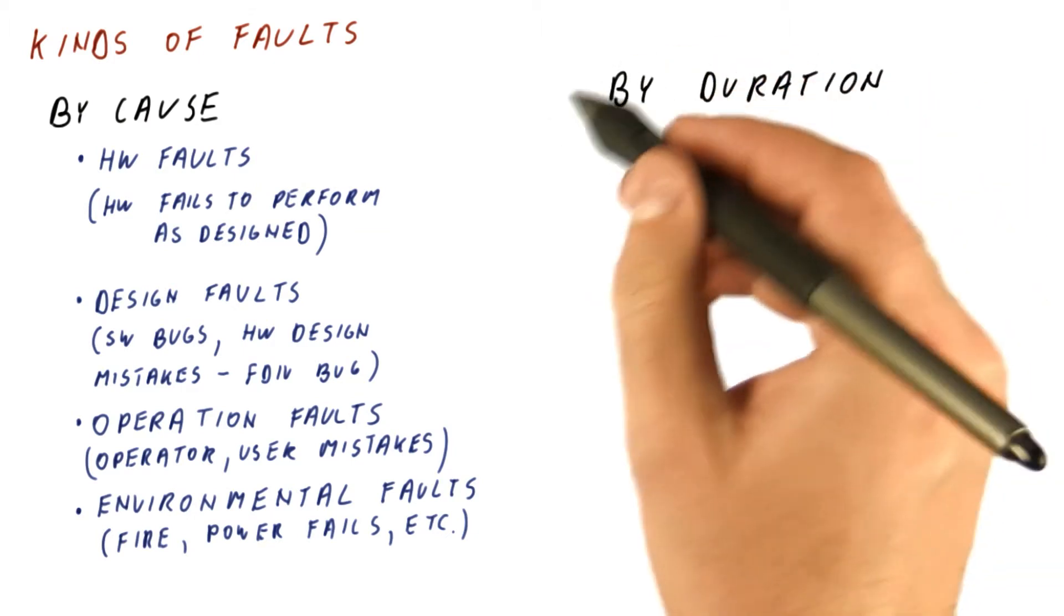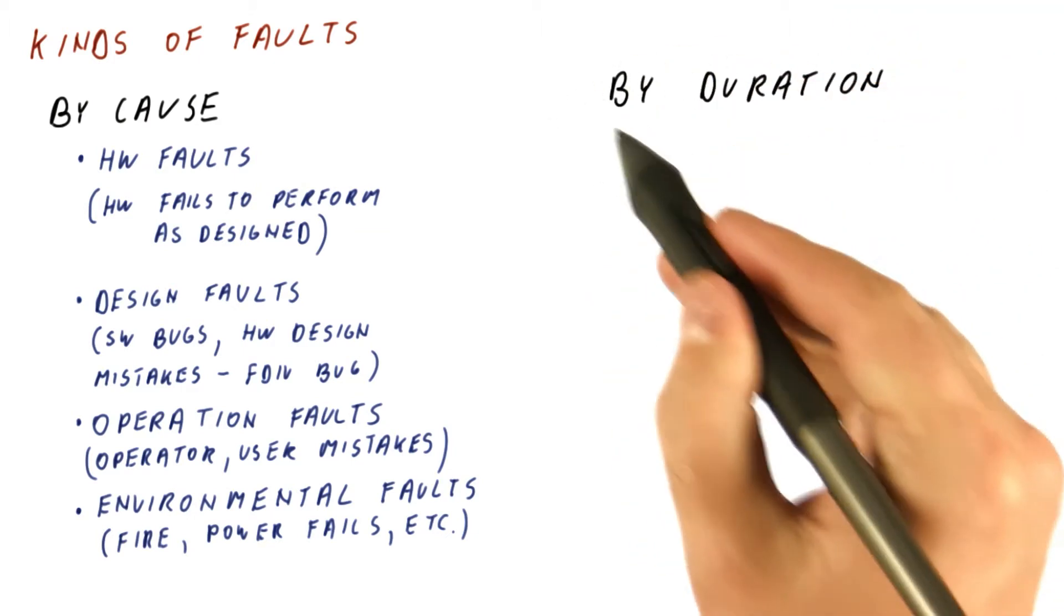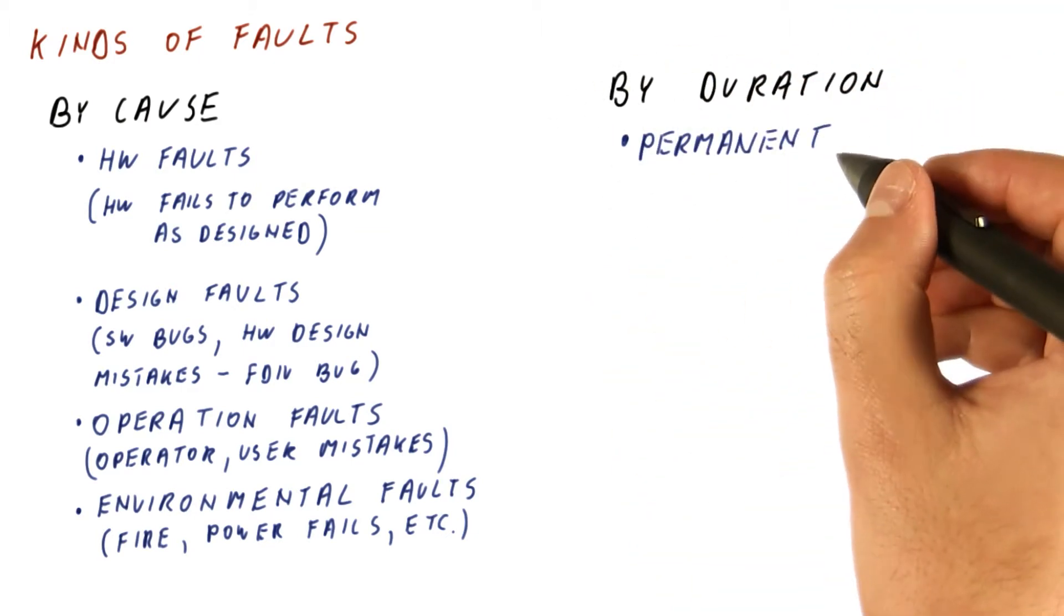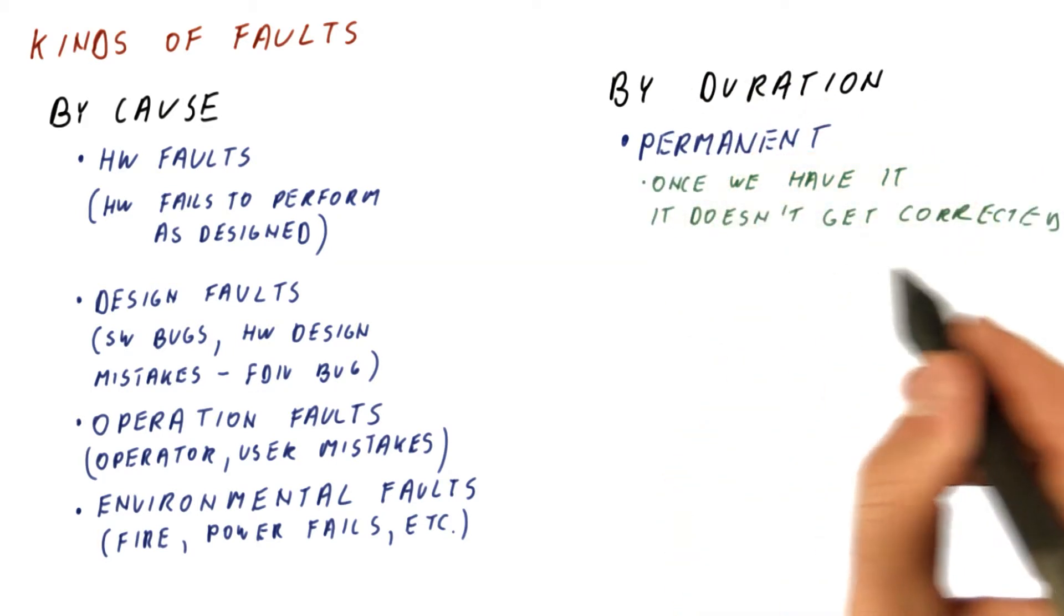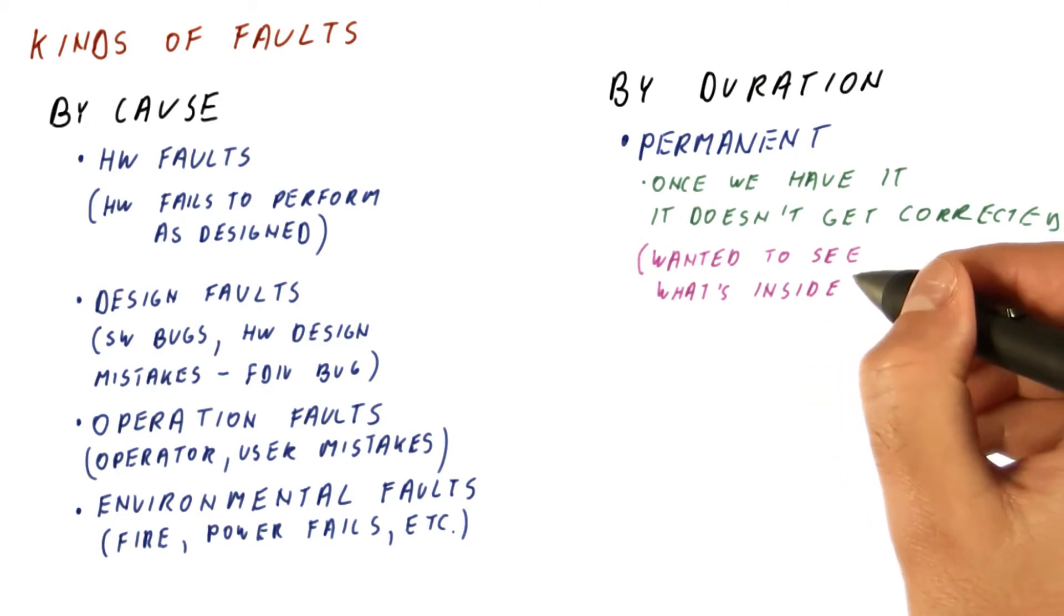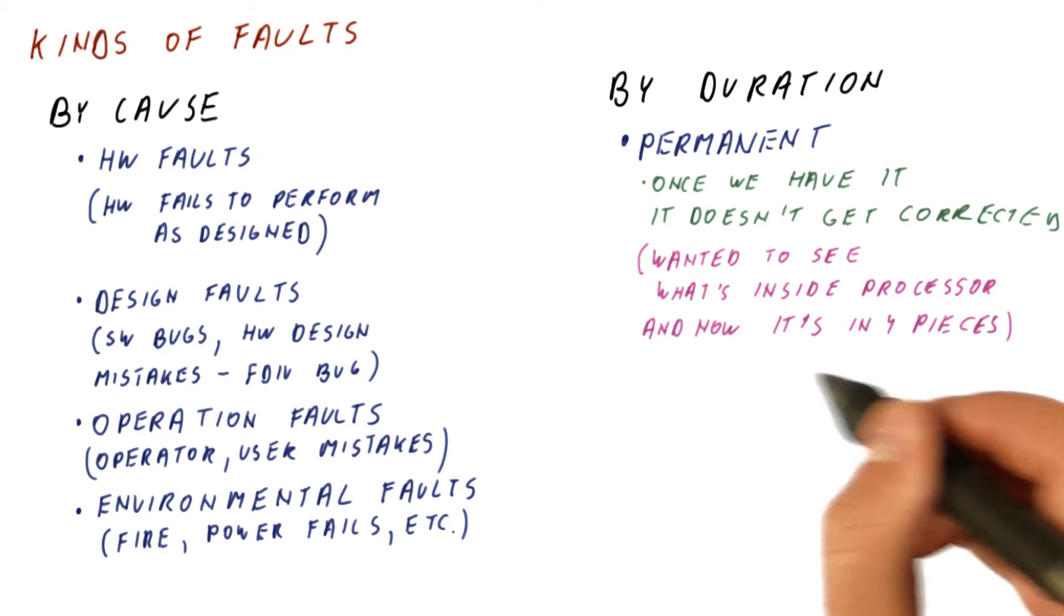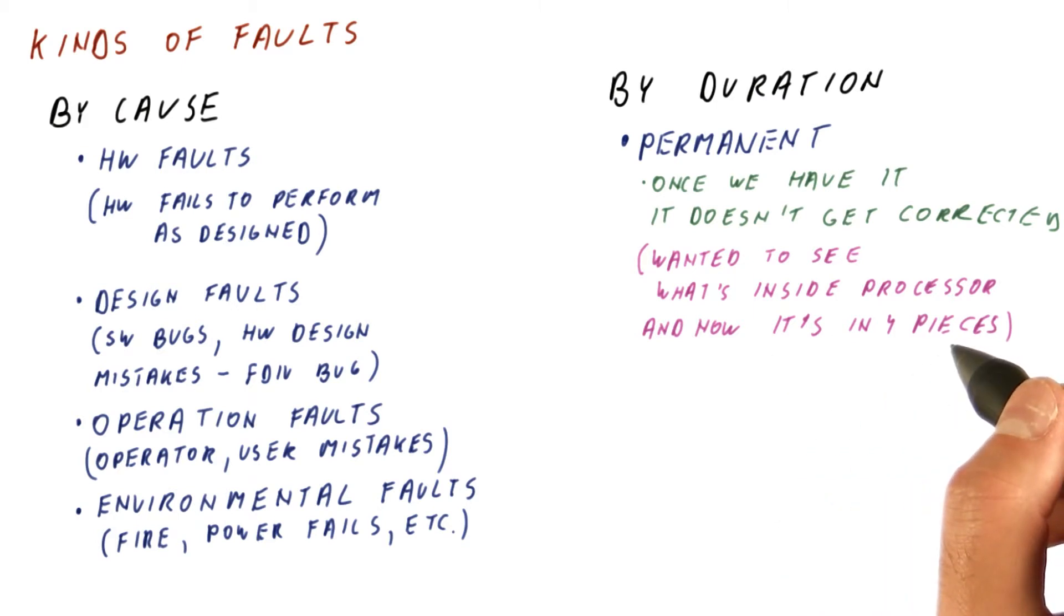We can also classify faults by duration. For how long do we have the fault condition? For example, we can have a permanent fault. Once we have it, it doesn't get corrected. An example of a permanent fault is when we want to see what's inside the processor, and now the processor is in four pieces and we don't know how to put it back together.